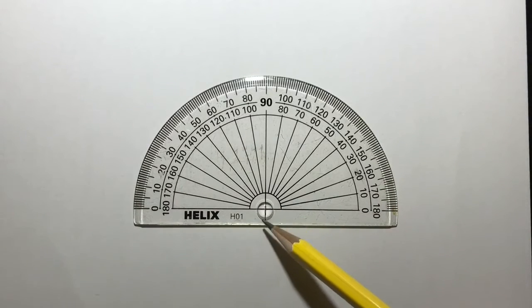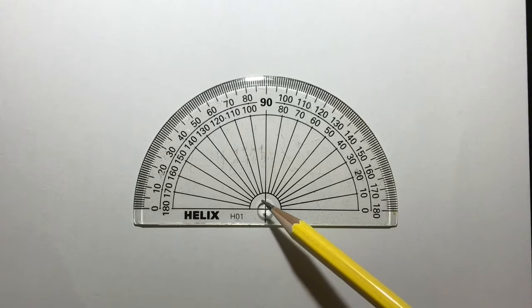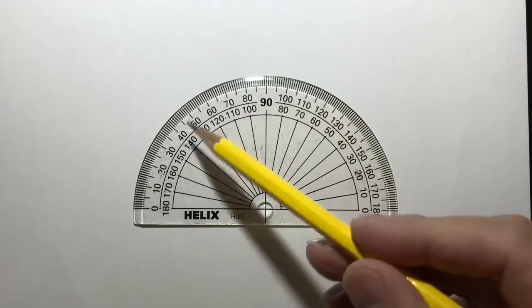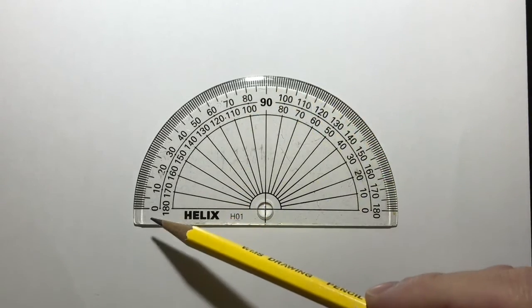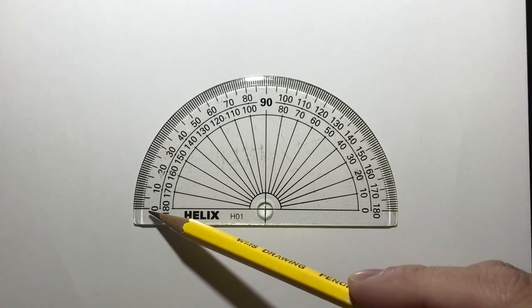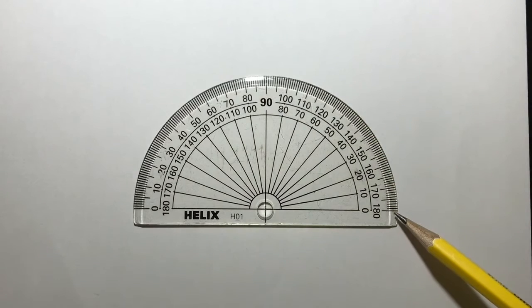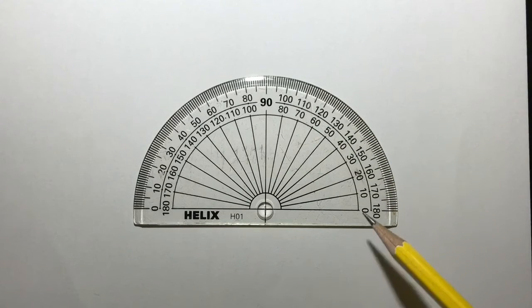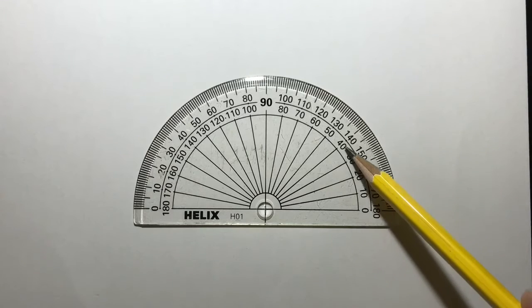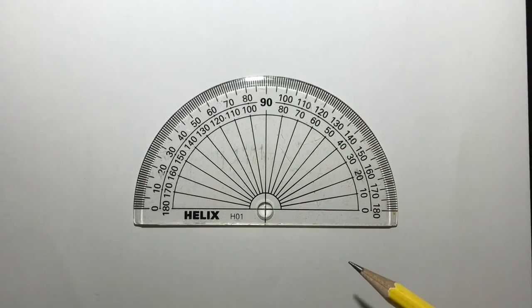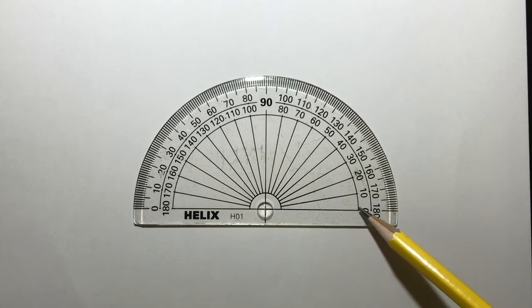We're interested in these crosshairs in the center here, that's where our angle radiates from, and we're interested in these two scales going round the outside. Now you can see starting from the left hand side here from zero we have a scale going all the way around through 90 to 180 degrees and we have another scale on the inside that runs from zero here round through 90 degrees to 180 that side. The scale we're going to be using is this inner scale that starts with zero on this side.